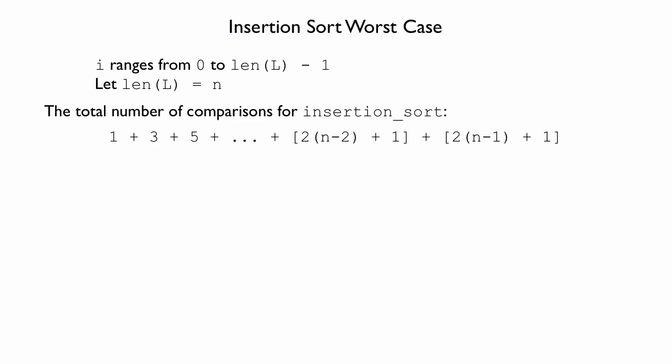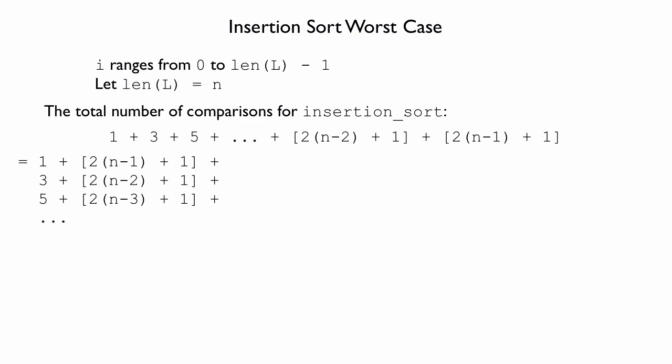This is an arithmetic series. Because addition is commutative, I'm going to group these slightly differently — adding the first and last items in the series together first, then the second and second last, the third and third last, and so on. In an arithmetic series, each of these pairs adds to the same number. The first pair: 2 times n minus 1 is 2n minus 2, plus 1 is 2n minus 1, plus 1 more is 2n. The second pair: 2 times n minus 2 is 2n minus 4, plus 1 is 2n minus 3, plus 3 gives 2n again. Because i ranges from 0 to n minus 1, there are n items in the series, meaning this pairing happens exactly n over 2 times. Simplifying, n times 2n over 2, we get n squared comparisons.